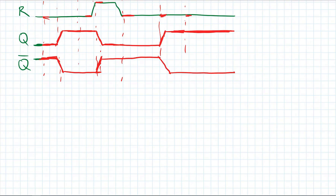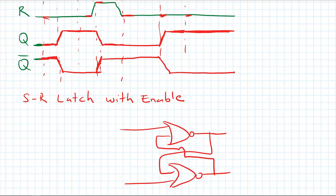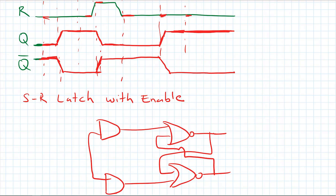We need to use an enable signal for our latch, so we need to design an SR latch with an enable signal. Let's assume we have this NOR gate-based SR latch — let's draw it. We had our S and R inputs, but now since we need to use an enable signal, I will be using an AND gate here. Using this AND gate, I will be controlling my SR latch, so this will be my enable signal.